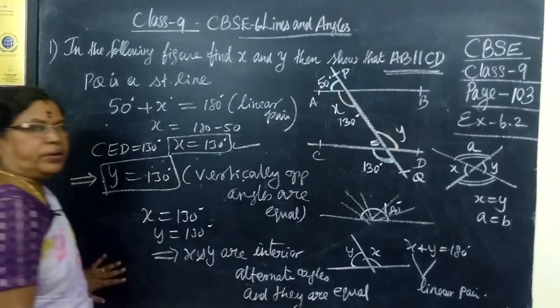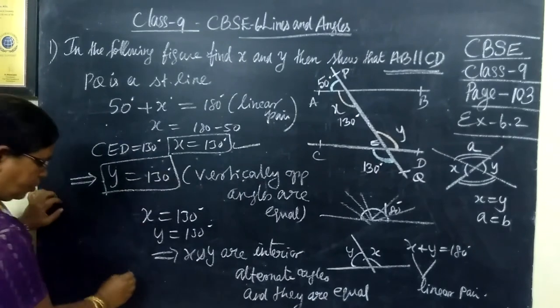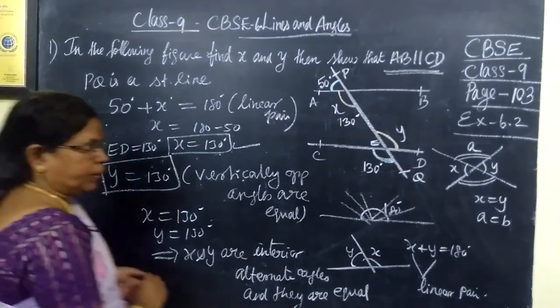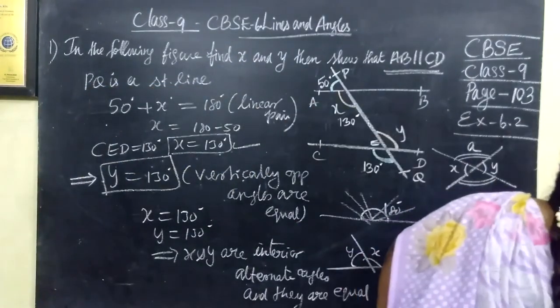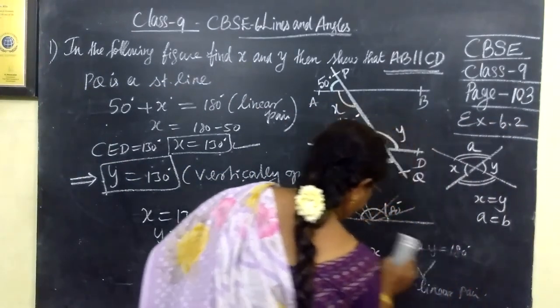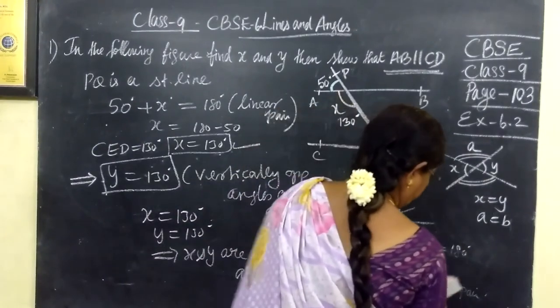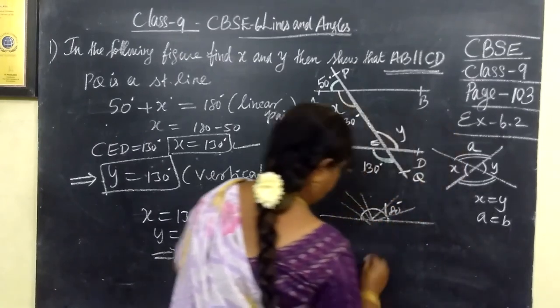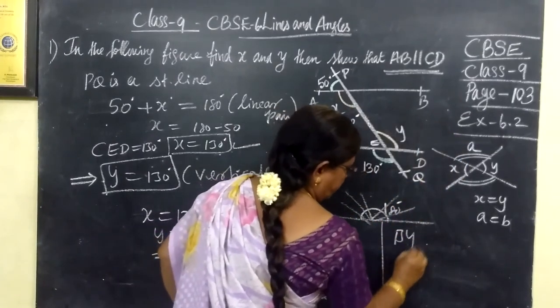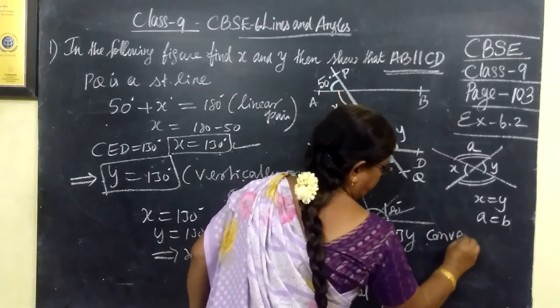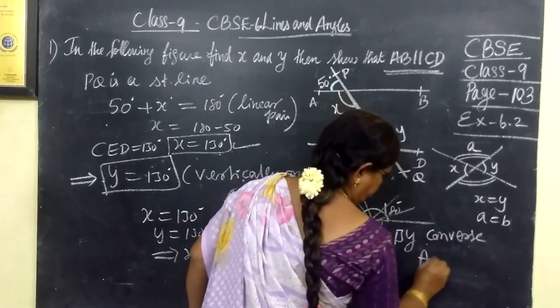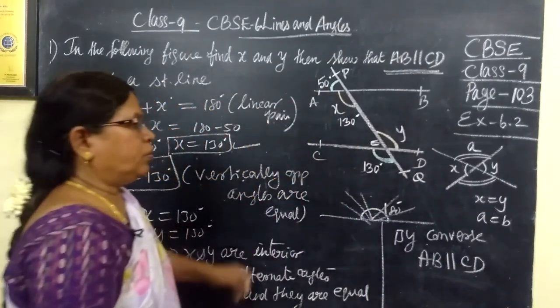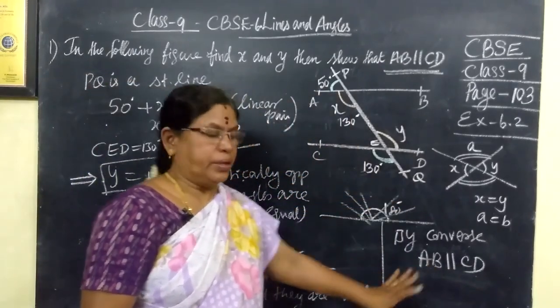So if interior alternate angles are equal, so this implies by converse, therefore by converse AB parallel to CD. So PQ is a straight line and AB parallel to CD.